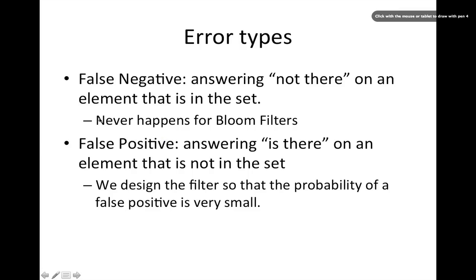So we have two types of errors to worry about. The first type of error is false negative. And saying that an element is not there when in fact it is, that never happens in bloom filters. Because once we set the bits to true, they will always remain true. They'll never be set to false, and we'll always see that the element is there.